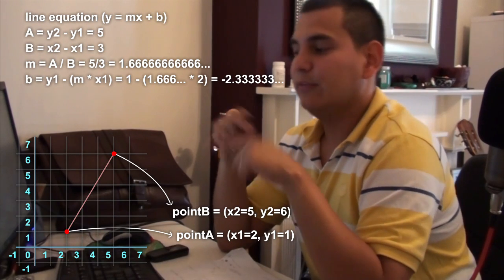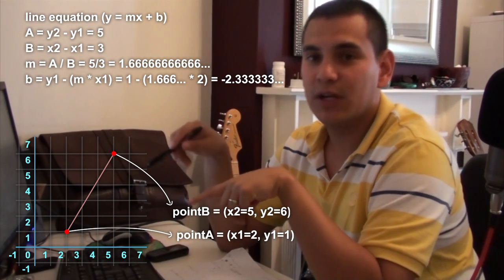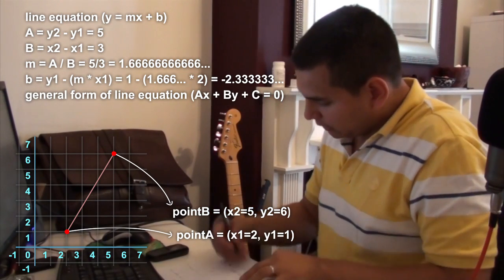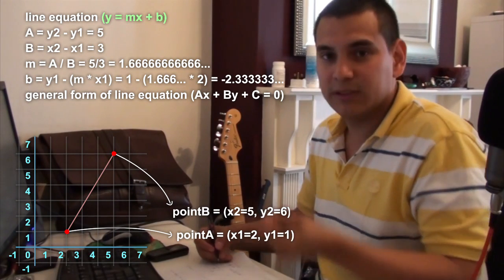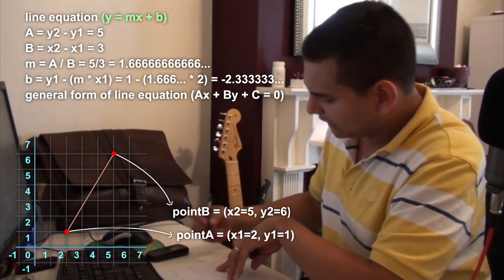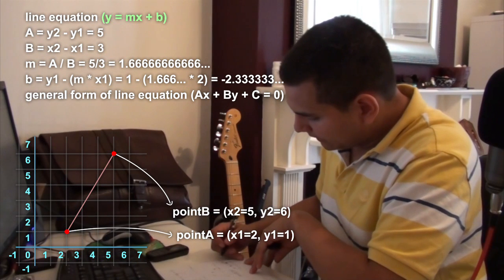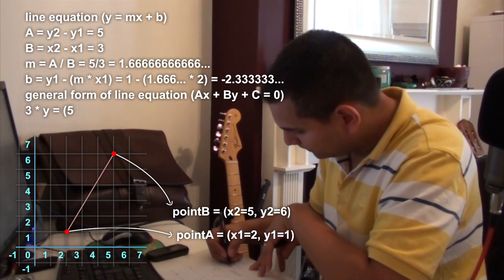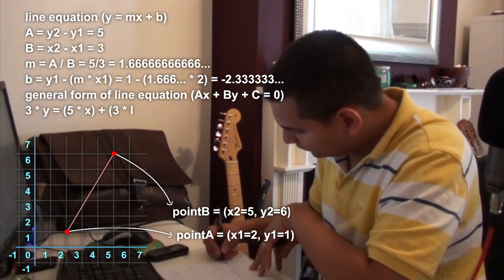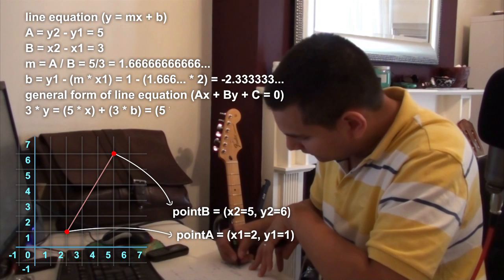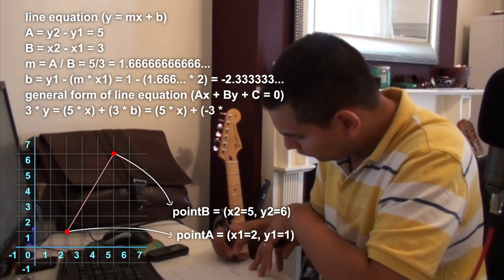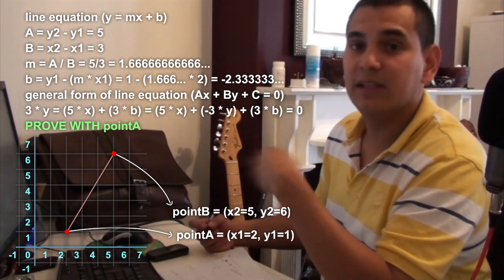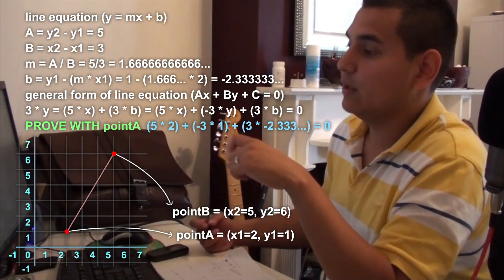One thing is that in the future, if you want to compare from this line equation to the general form of the line equation, it's just as simple as this. We got this equation, Y is equal to the slope that we know that the slope is 5 divided 3 times X plus B. It's just as simple as, 3 times Y is equal to 5 times X plus 3 times B, which means that 5 times X plus 3 times Y plus 3 times B is equal 0. That is the general form of this line equation.